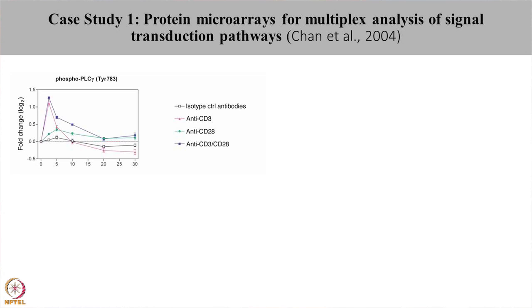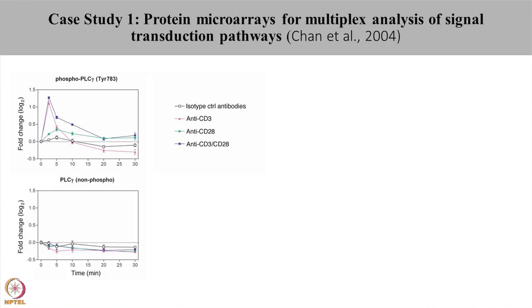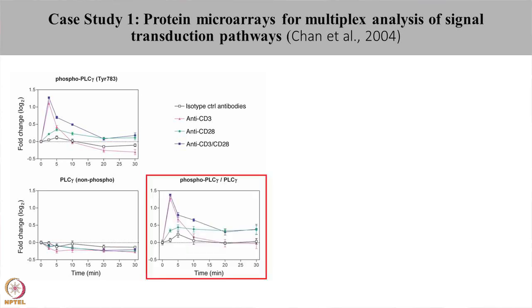To further study the signal transduction kinetics, the authors studied the phosphorylation level of phospholipase C gamma protein. The cell lines were treated at different time points and cells were treated with isotype antibodies as control, with CD3 antibody, CD28 antibody, and a combination of CD3 and CD28 antibodies. The protein microarray was also probed with non-phospho antibodies to study the overall concentration of phospholipase C in the cell lysate. The graph shows the adjusted level of phosphorylated PLC gamma for the total phospholipase C present in the cell. The phosphorylation kinetics did not change when the cells were treated with isotype control antibodies.